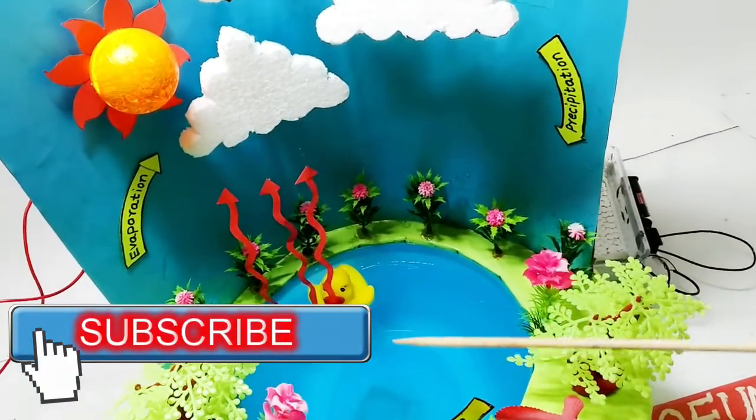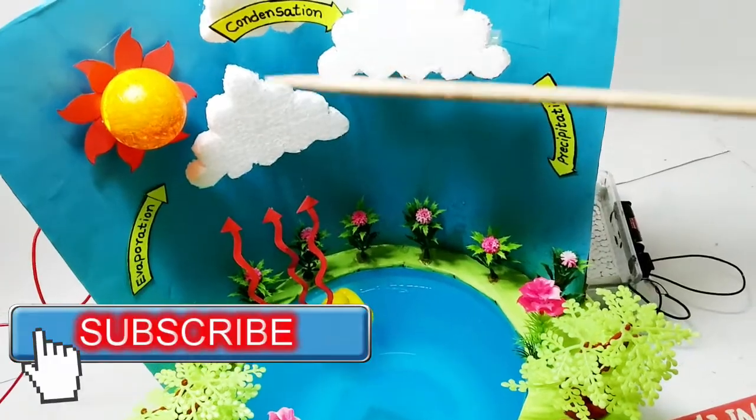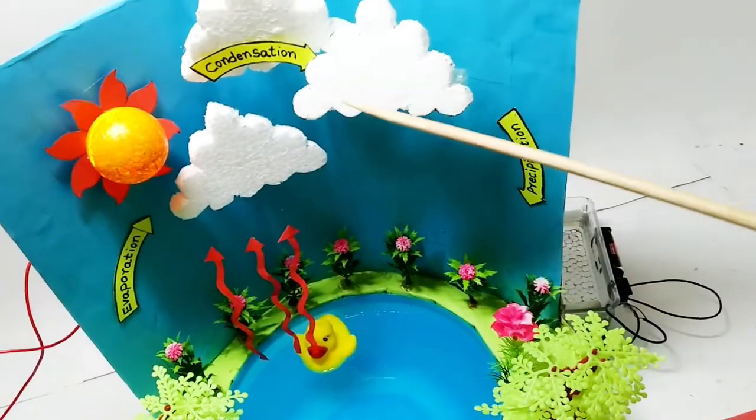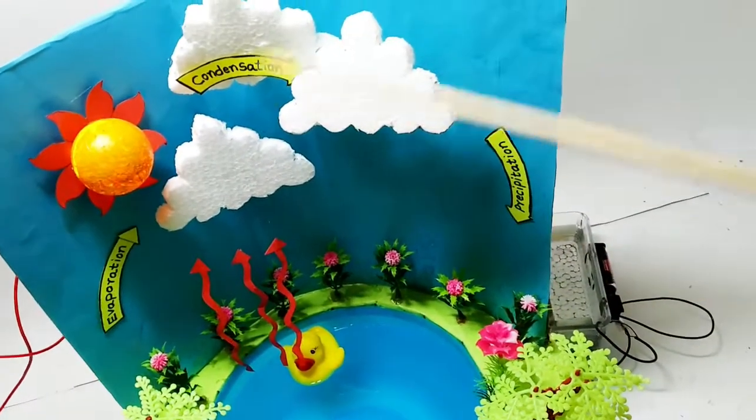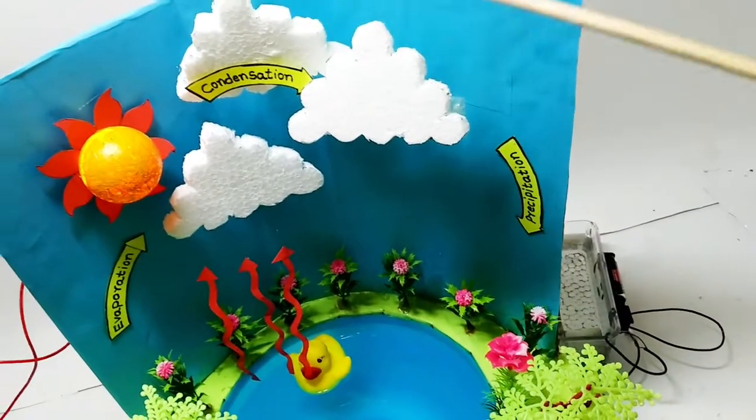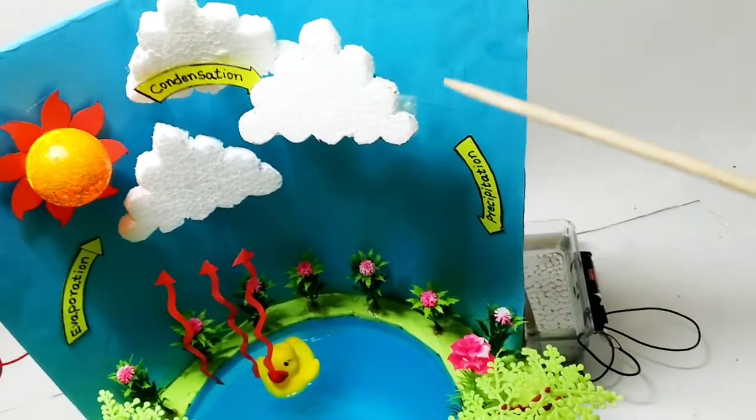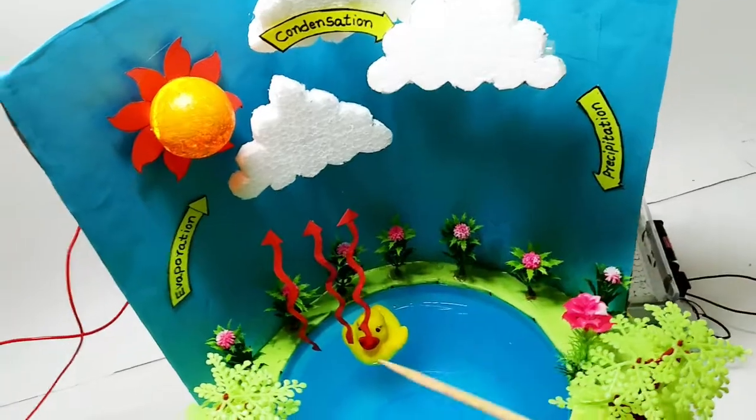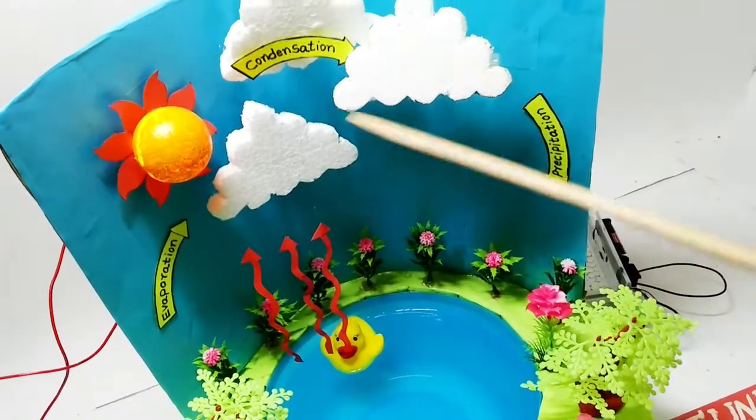When the evaporation moves towards the clouds, condensation happens. Once condensation occurs on the cloud, rains will start.